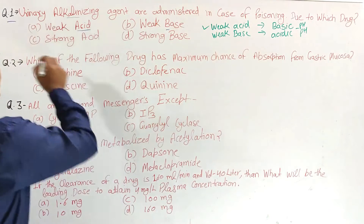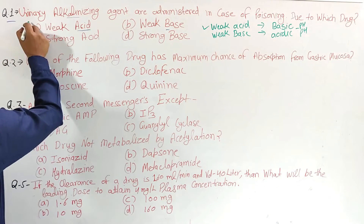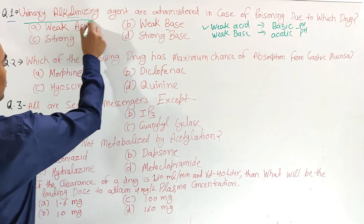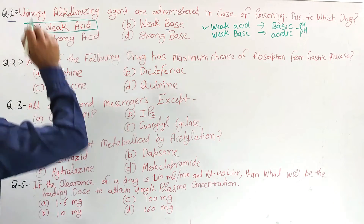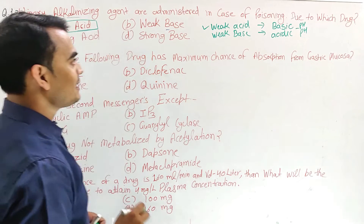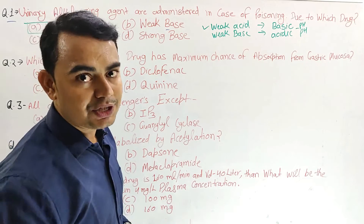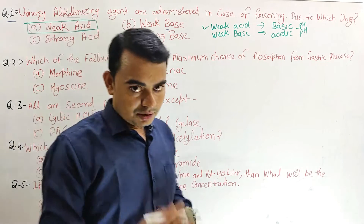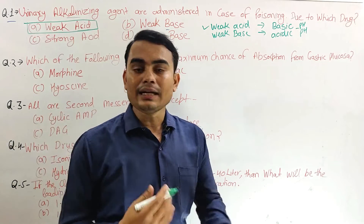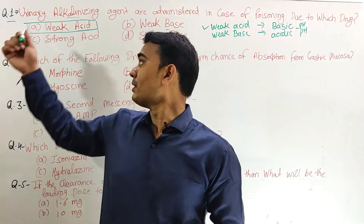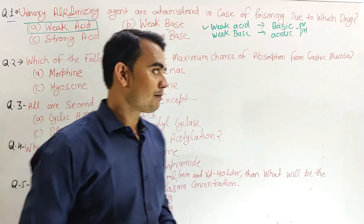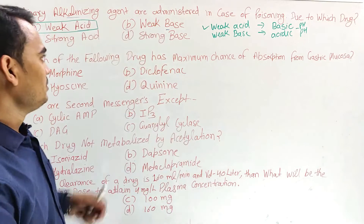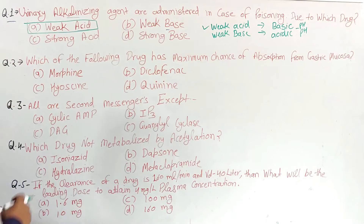So in this question, the drug poisoning is of a weak acid, and to treat it you give urinary alkalinization. Now the next question.